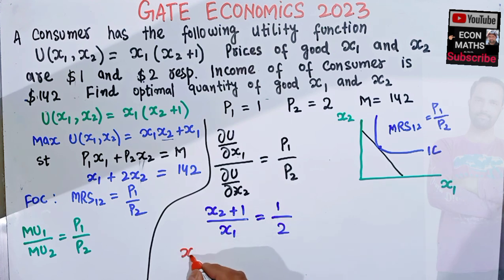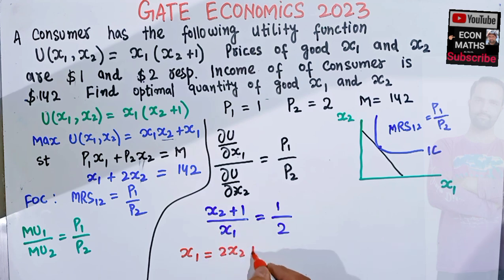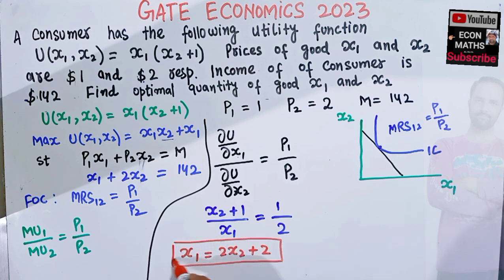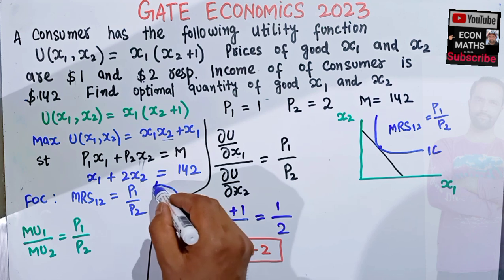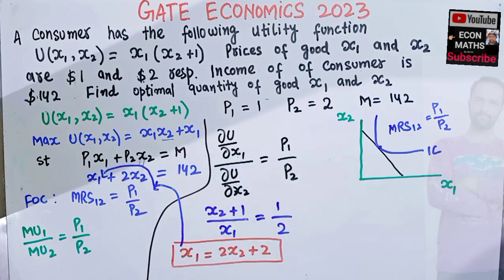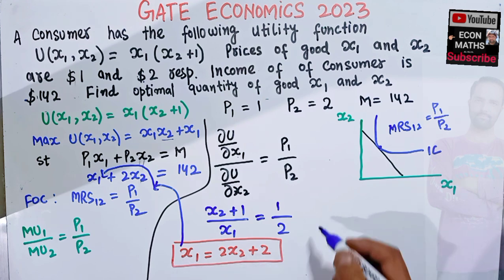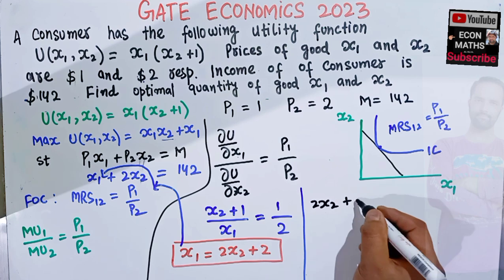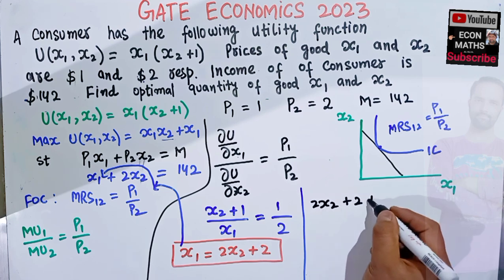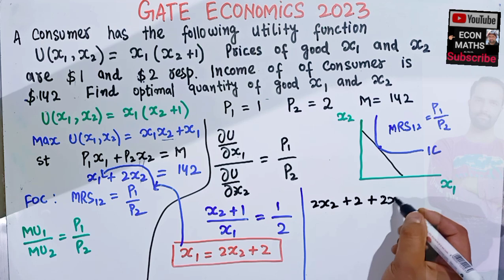Cross-multiplying gives x1 = 2x2 + 2. We now substitute this expression for x1 into the budget constraint x1 + 2x2 = 142.